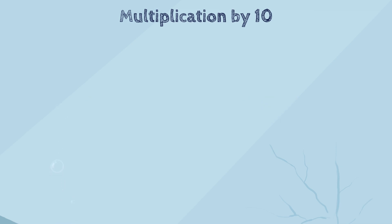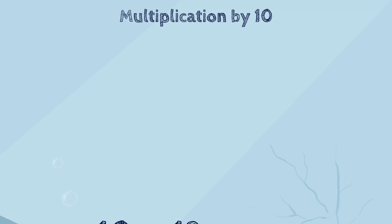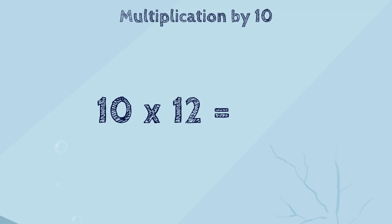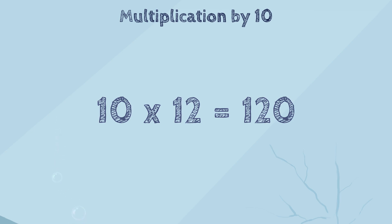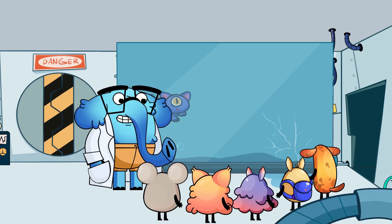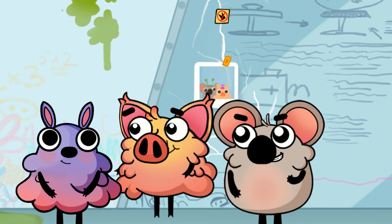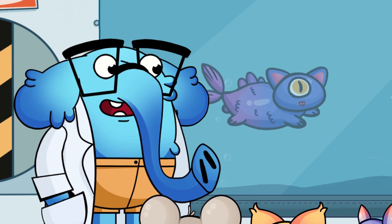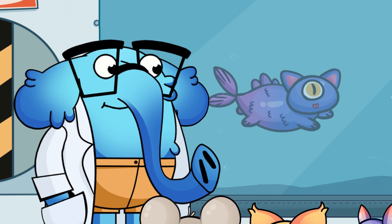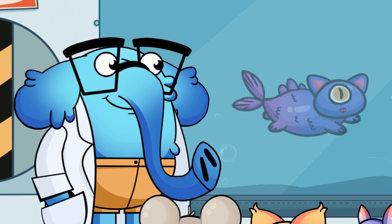Let's try to solve another problem. What is ten times twelve? One hundred and twenty. Yes, that's it. I think you understand the trick. Yes, this is really helpful. Okay, now let's look at multiplication by five.